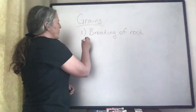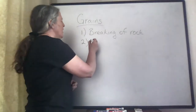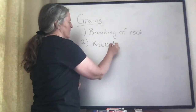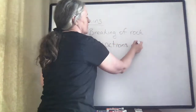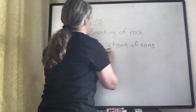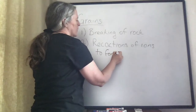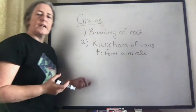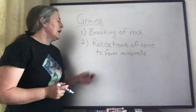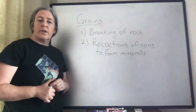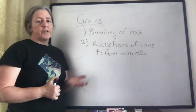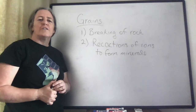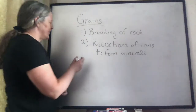We have the way we can make grains chemically, which are the reactions of ions to form new minerals. An example of that is the formation of clay minerals from the process of weathering, or the formation of salts with the evaporation of water. The most abundant mineral that forms from ions is carbonate, which often forms as shells, but it can form from other processes.